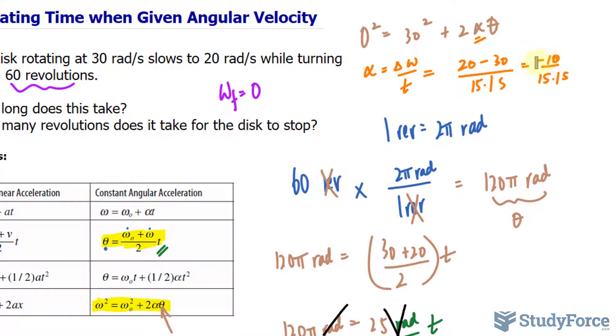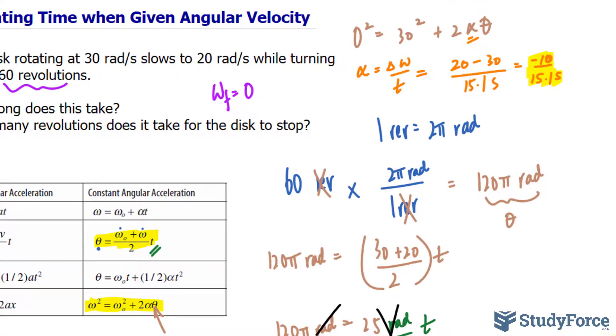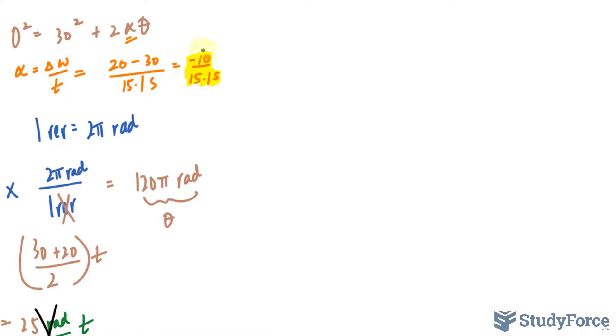Therefore, I will take this and place it in for alpha. You can even find out and evaluate this as a number if you like. So I have zero is equal to 30 to the power of 2 is 900 plus 2 times that. I'm just keeping it as a fraction because it's neater. And theta is what we're looking for. Bringing that 900 over. Negative 900 is equal to 2 times negative 10 over 15.1 theta.